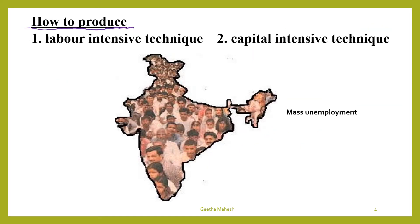Second one is how to produce. In a centrally planned economy they are going to use such type of technology which is most suitable for the economy. There are two types of technique of production: labor intensive technique and capital intensive technique. If it is a labor-rich country facing mass unemployment, then labor intensive technology is preferred rather than capital intensive technology, so that they can generate more employment opportunities and thereby reduce unemployment and poverty.